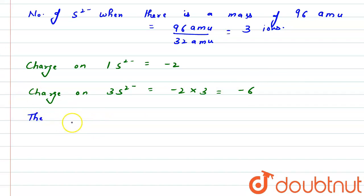Now we can say the charge of 96 atomic mass unit sulfide ions is minus 6. That is charge on 6 electrons.